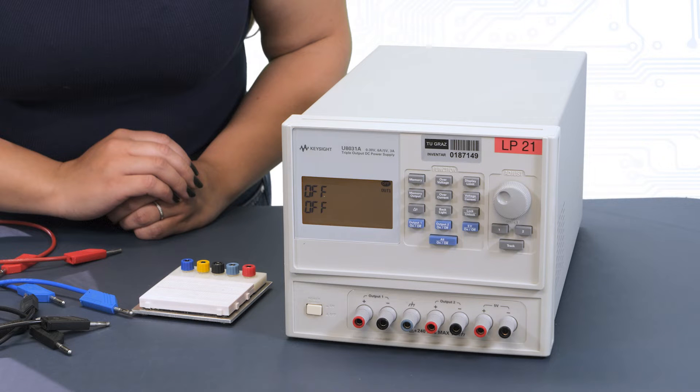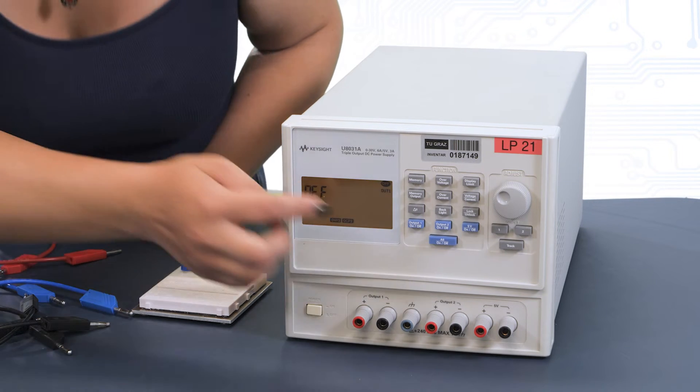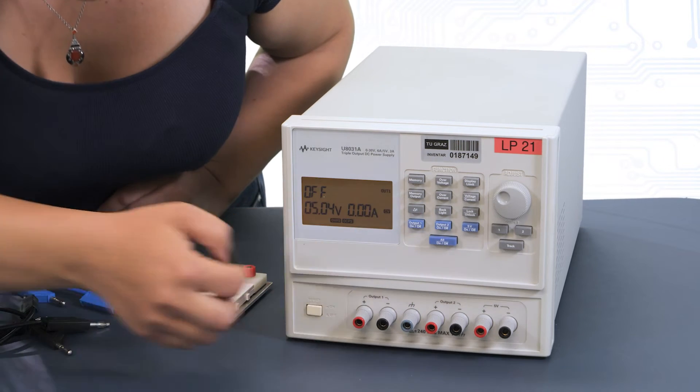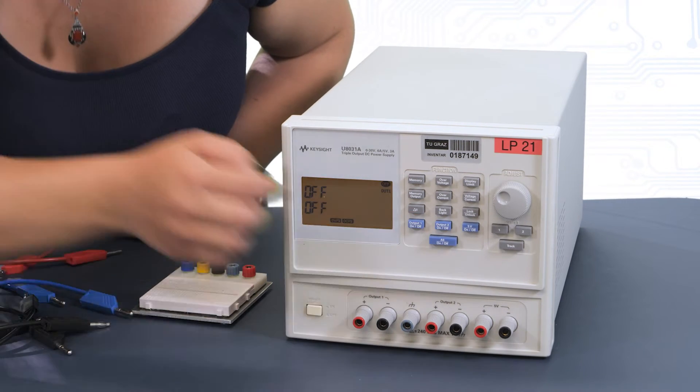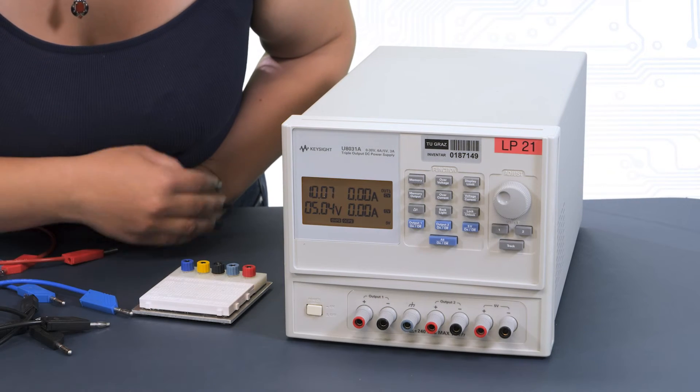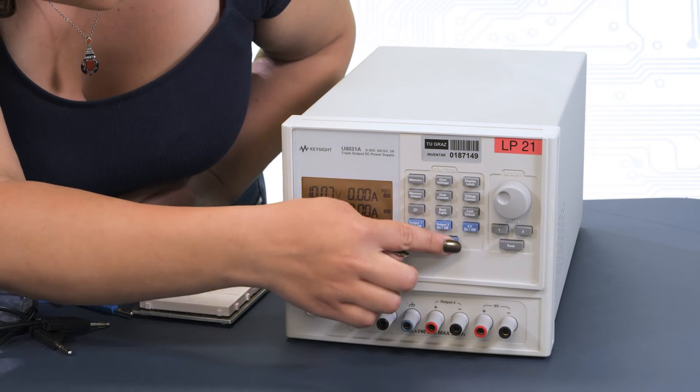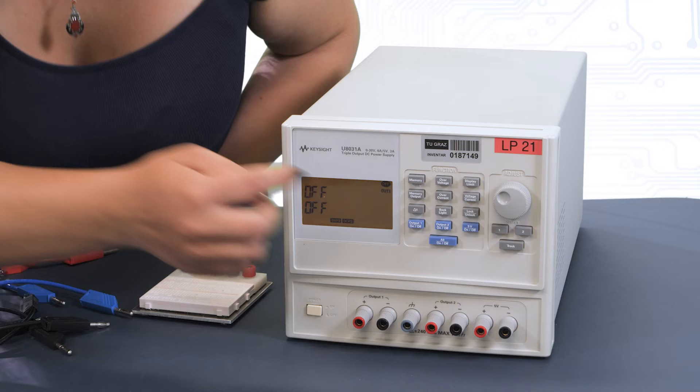Initially, all outputs of the power supply are switched off. You can now switch on each output individually or all outputs together with the corresponding buttons. If you want to set the voltage of the active output, you can do this with the rotary control.